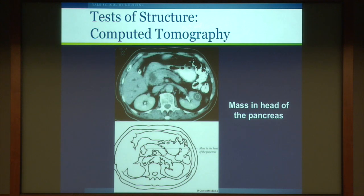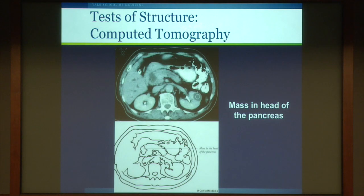A CT scan demonstrating a lesion in the head of the pancreas shows a dilated bile duct and intrahepatic bile duct dilatation. This is typically what we see in a patient who presents with carcinoma in the head of the pancreas, which is the most common location for cancer of the pancreas.